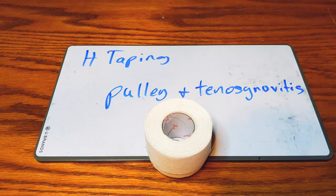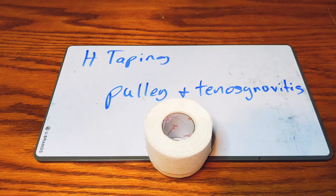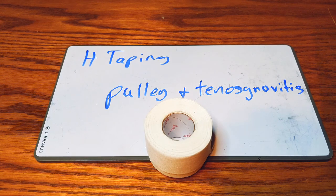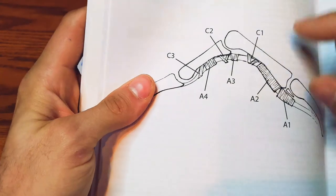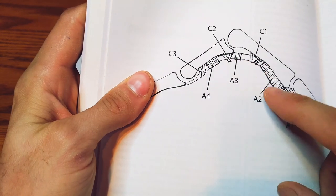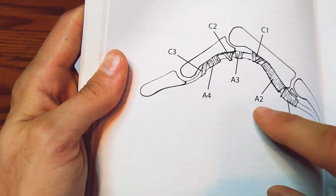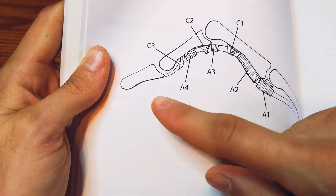You can see, let me pull out this book and show you the pulleys. So you can see here's the pulleys right there: A4, A3, and A2, this being the base of your finger and this being the tip.